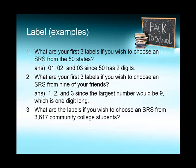What are the labels if you wish to choose an SRS from 3,617 community college students? That number has four digits, so you're going to have to have four digits in every single label. So you're going to start with 0001, and then three zeros and a two, and then three zeros and a four, all the way up to 3617.